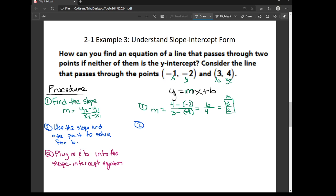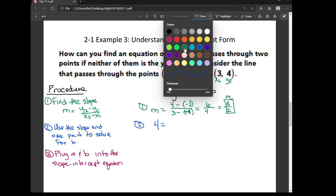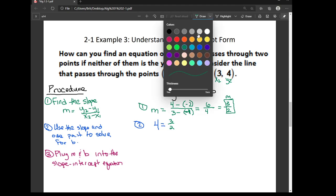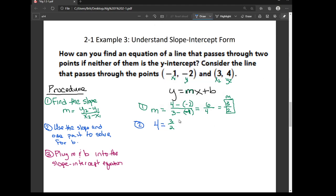So where the y is on our main equation, I'm going to plug in a 4. So 4 equals, and then where m is, I'm going to go ahead and put that 3 halves that we just found. And then times x, our x value is 3, plus b.